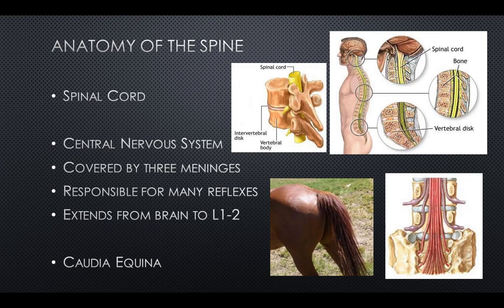The cauda equina, Latin for horse's tail, is a bundle of spinal nerves and spinal nerve roots consisting of the second through fifth lumbar nerve pairs, the first through fifth sacral nerve pairs, and the coccygeal nerve, all of which arise from the lumbar enlargement and the conus medullaris of the spinal cord. The nerves that compose the cauda equina innervate the pelvic organs and lower limbs, including motor innervation of the hips, knees, ankles, feet, internal anal sphincter, and external anal sphincter.